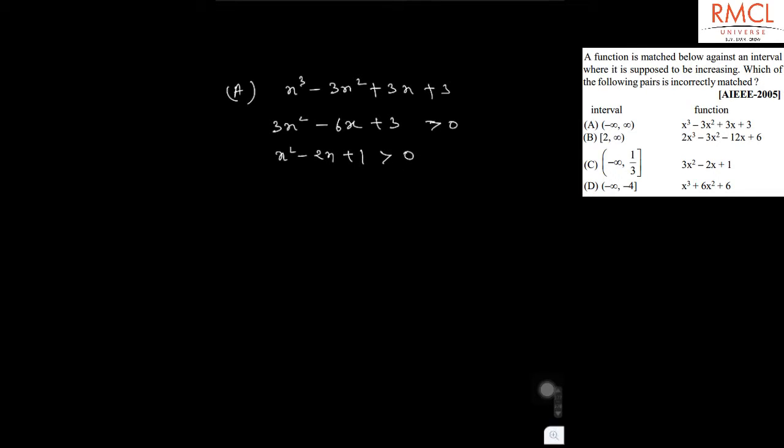This is (x - 1)². As you can see, this is always greater than 0, so it is increasing in the interval (-∞, ∞). Option A is correct. Similarly, option B is also correct.